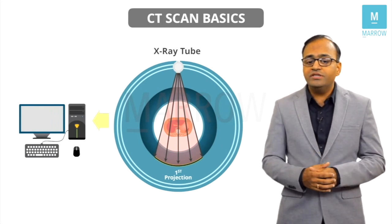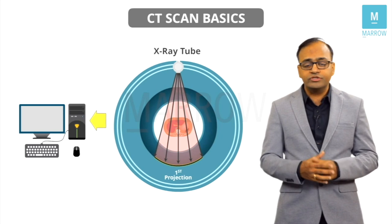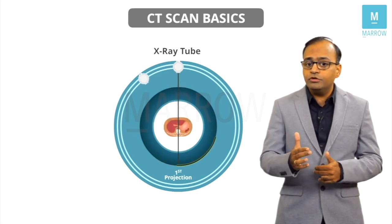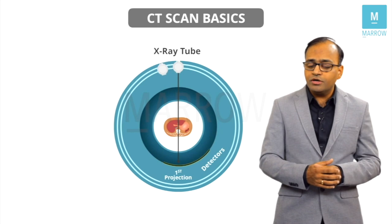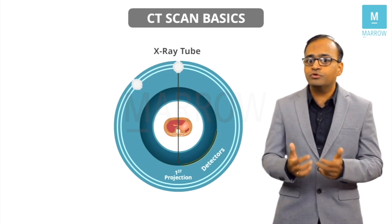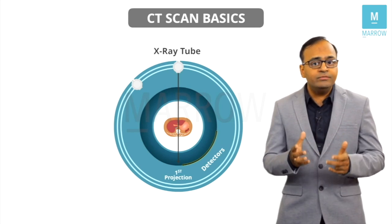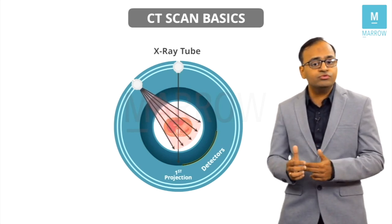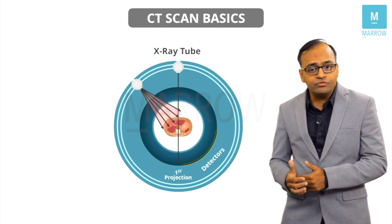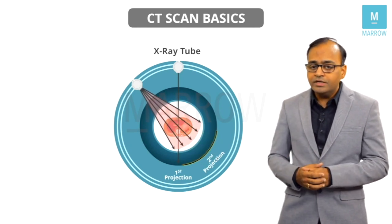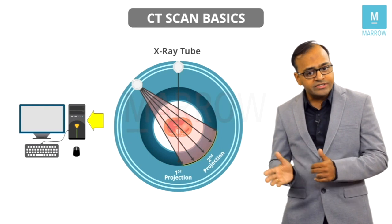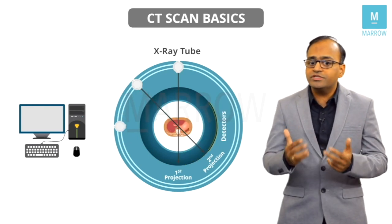Now, the next step that occurs is very beautiful. The x-ray tube is moved to a new position along the circumference, and the detectors are also moved. From this new position, the same process is repeated — the x-ray beam is produced, this beam passes through the patient's body, and we get another image. This is called the second projection, which looks different from the first projection. Data is again transferred to the computer.